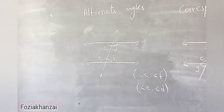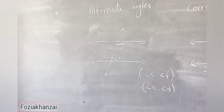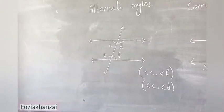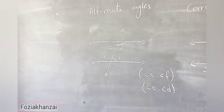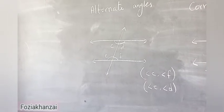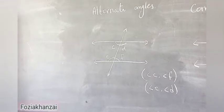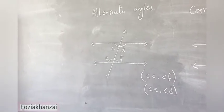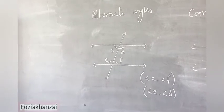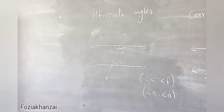For example, angles C and F — both are interior angles and both are on opposite sides of the transversal line. Another example: angle D and angle E are also alternate angles. Both angle D and angle E are on opposite sides of the transversal line and both are interior angles.